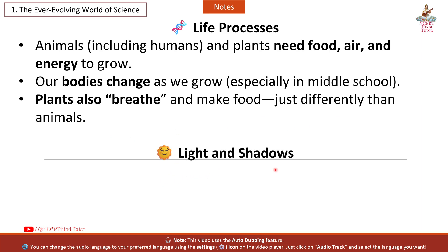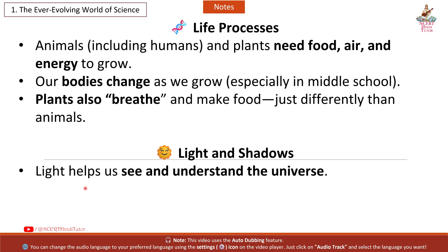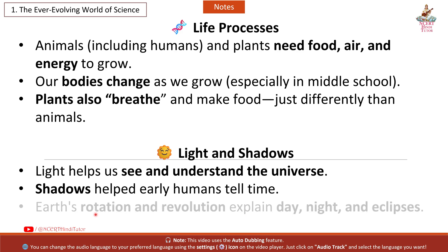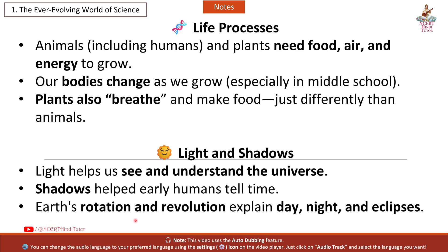Light and shadows: Light helps us see and understand the universe. Shadows helped early humans tell time. Earth's rotation and revolution explain day, night, and eclipses.